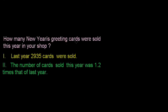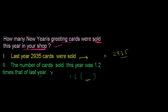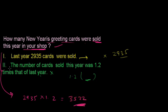Next problem: How many greeting cards were sold this year in your shop? Statement one: last year 2,935 cards were sold. From this alone I don't know how many will be sold this year. Statement two: the number of cards sold this year was 1.5 times last year. Without knowing last year's figure, I can't calculate. Combining both statements: 1.5 times 2,935 gives approximately 3,522. So I'm getting the answer by combining. The answer is D — both statements are necessary. We have now checked all problems with answers A, B, C, and D.